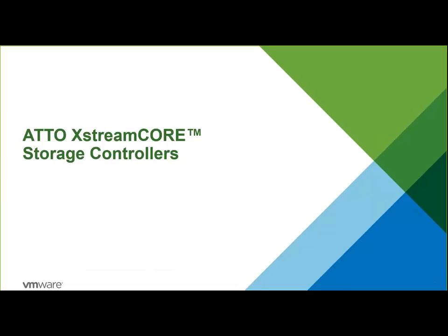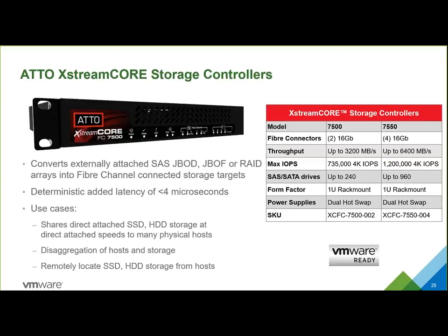The ADO ExtremeCore Storage Controllers are not storage themselves — they connect and share up to 960 drives. They can be SAS JBODs full of spinning disks, JBODs full of flash disks, or RAID arrays. The device takes these SAS drives and presents them over fiber channel to be shared at high speed to multiple hosts and clients. The speeds can get up to about 6,400 megabytes per second per controller and about 1.2 million 4K IOPS per controller. It shares the direct-attached storage and disaggregates hosts and storage, allowing you to scale and add storage without opening up a server. It also gives you the ability to remotely locate that storage, and there is no change to the data on the storage attached to it.